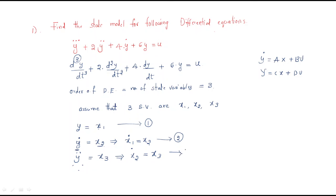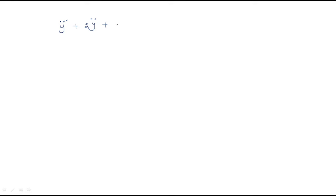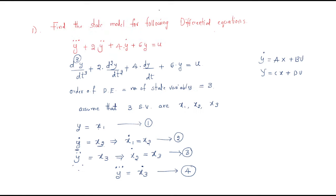This is the third equation. For the fourth equation, y triple dot gives us x3̇. Now we rewrite the original given differential equation: y‴ = -2ÿ - 4ẏ - 6y + u. We will use this to find x3̇ by substituting our state variable definitions.